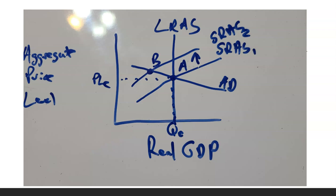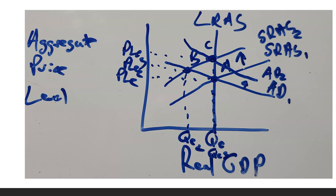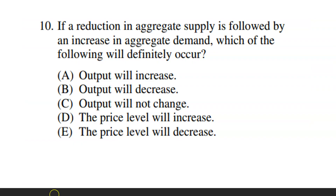I forgot to relabel PL and QE but price level goes up and GDP goes down with the supply shift. Then aggregate demand goes up — we move from A to B and then up to C — price level rises further and real GDP goes up. The only thing that is sure to happen when both shifts occur is that price level will increase. So D is the answer. I hope you enjoyed this — we're going to stop here.